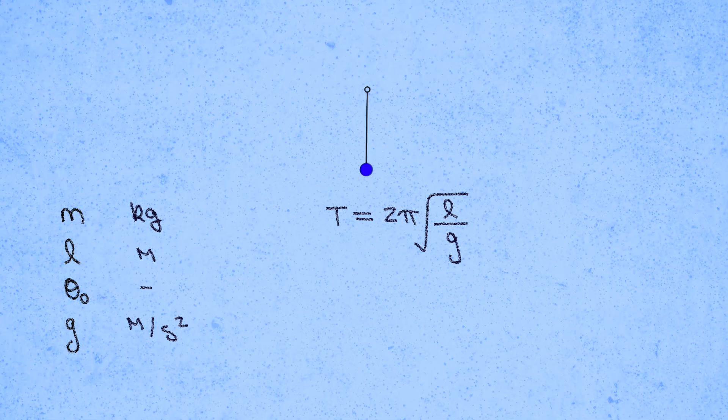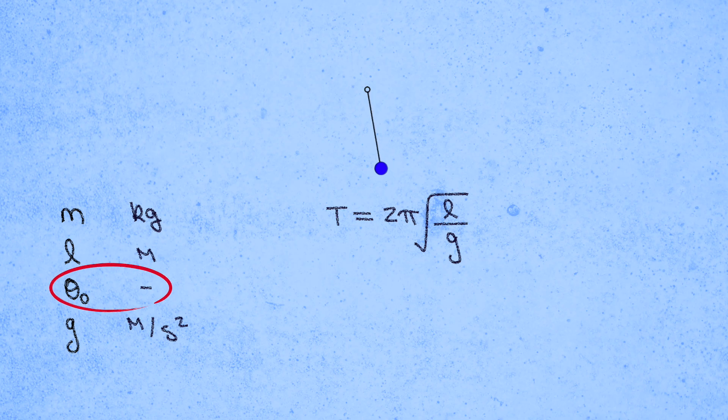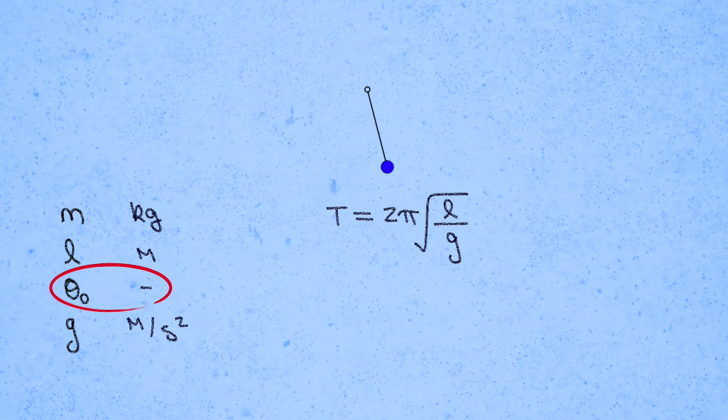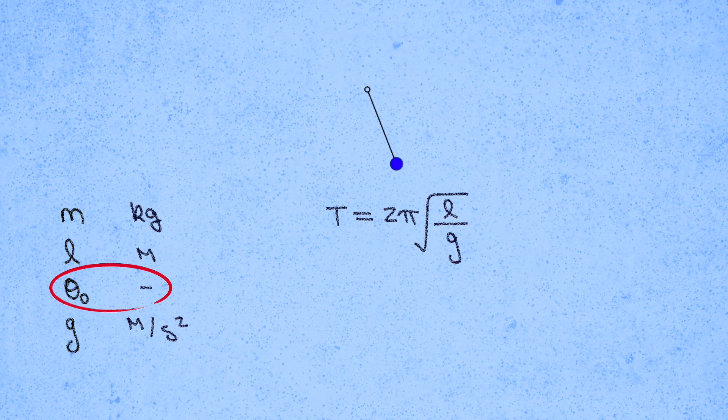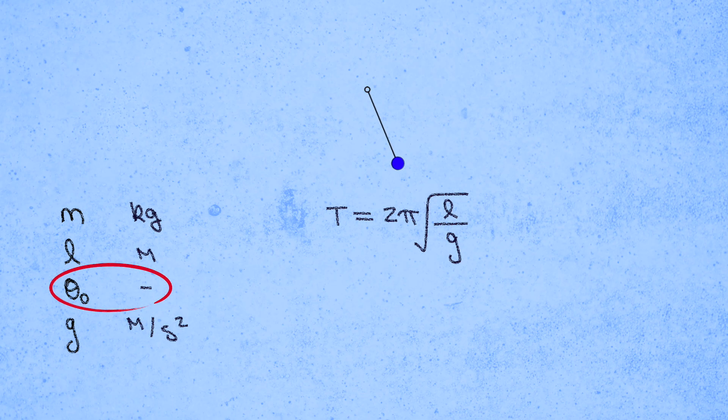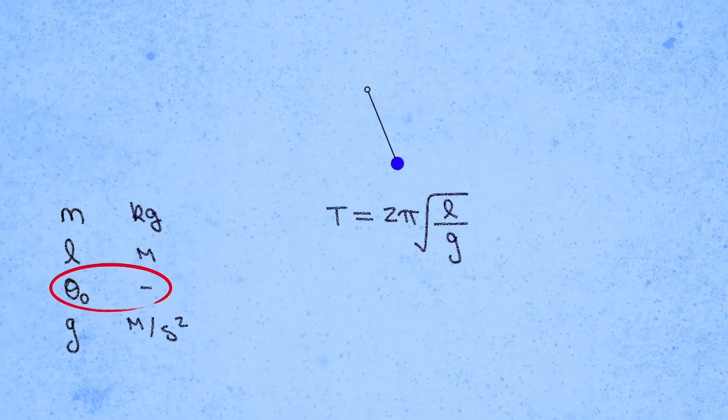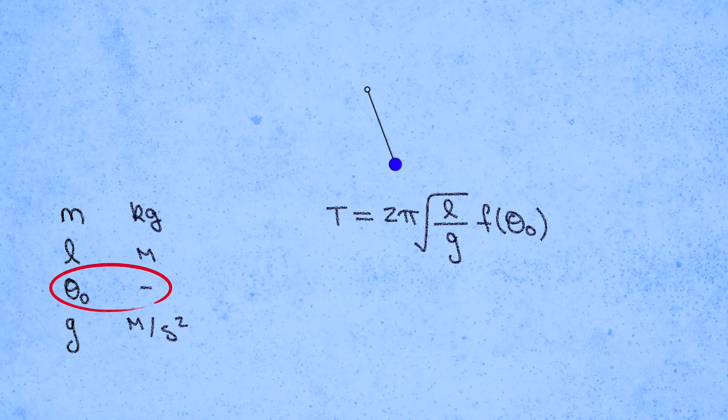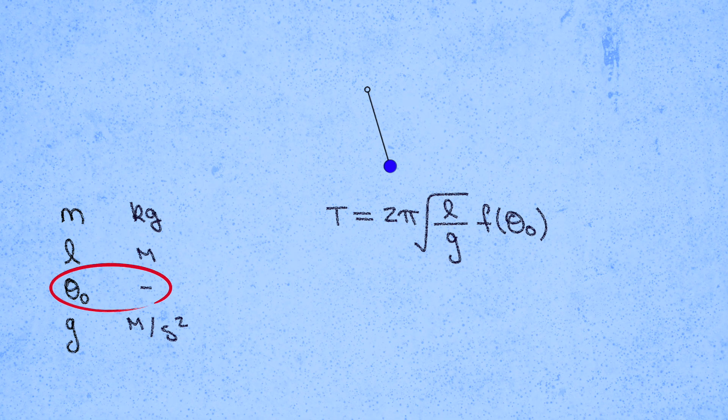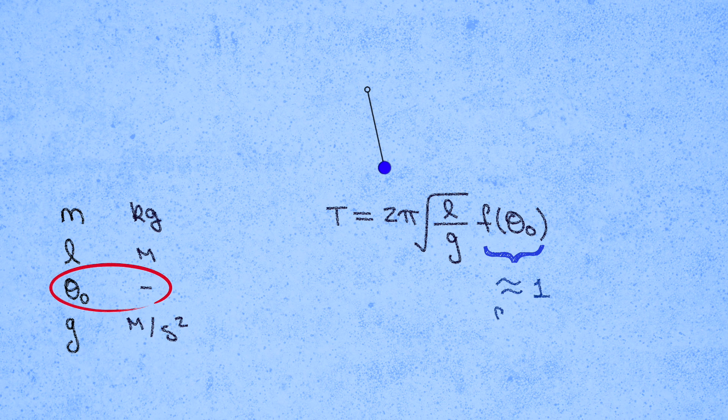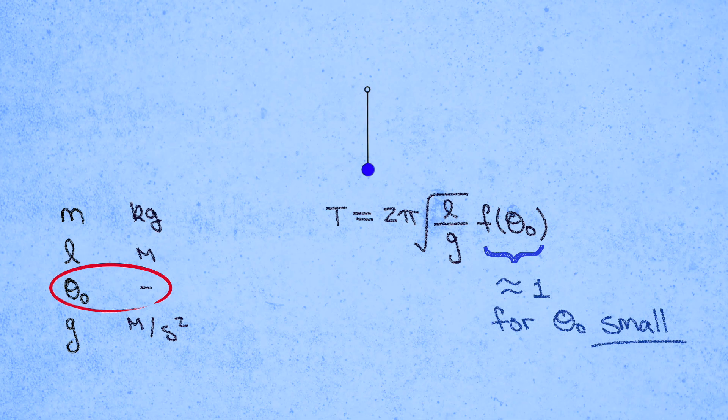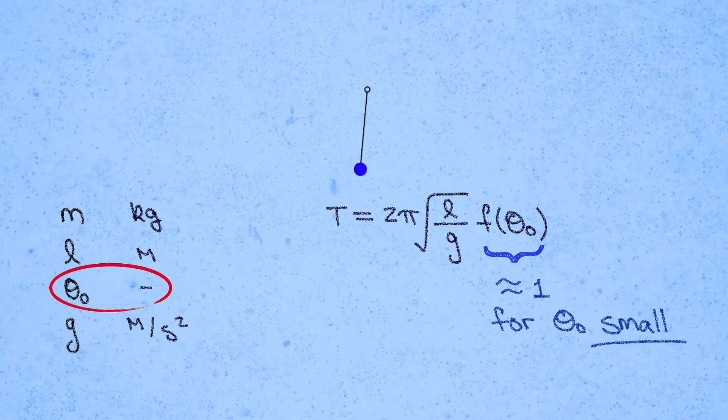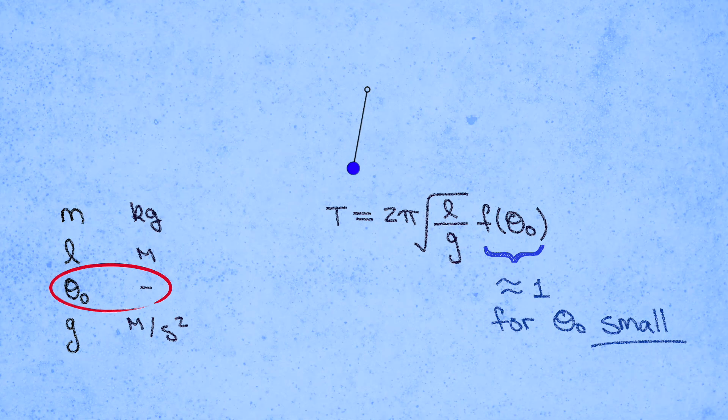Finally, what happened to the parameter corresponding to the initial angle, theta 0? That parameter is unitless, so just like the factors of 2 and pi, the dimensions alone don't tell us how the period will depend on the initial angle. We could in fact insert any function, f of theta 0, in the answer and still get the correct units. As it happens, f is about equal to 1 for small initial angles. But at larger angles, the period does depend on theta 0, like I told you about in an earlier video that I'll link up in the corner. But okay, maybe you thought that example was a little too easy.